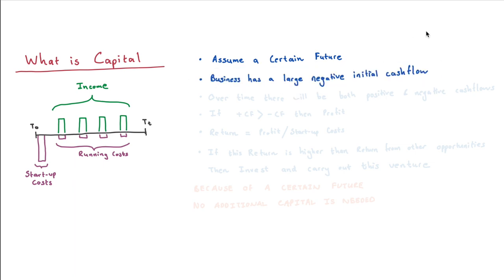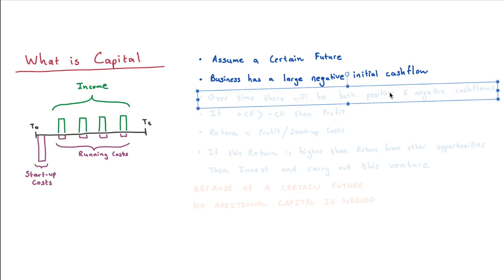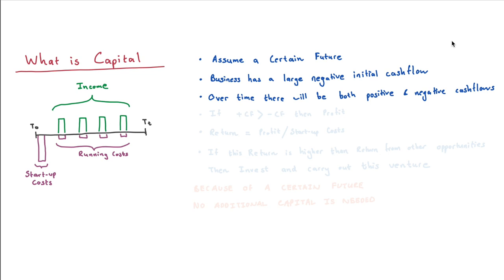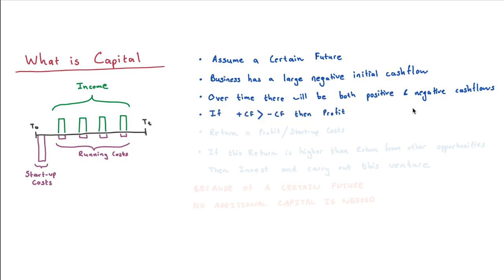Most businesses have this large negative initial cash flow, representing the equipment needed, the three months deposit of rent, and any other start-up costs needed to get the business up and running. Once the business is running, there are still going to be some running costs — you've got to pay salaries, you've got to pay rent — but now you're also going to be enjoying a positive cash flow from either selling your product or rendering your services. If the positive cash flows are greater than the negative cash flows, the business is going to enjoy a profit.